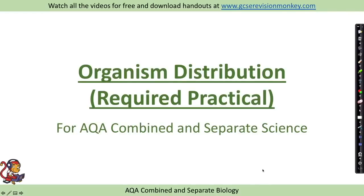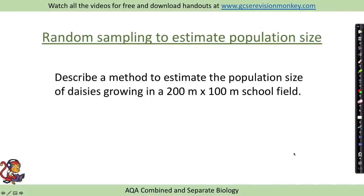For organism distribution, there are two different ways we're going to look at to sample organisms. The first one is random sampling and the second one is transects. Random sampling might be used to estimate a particular population size.